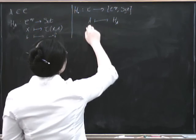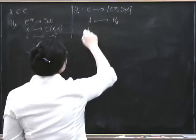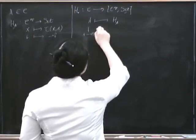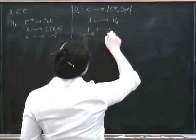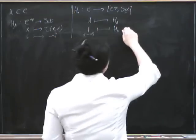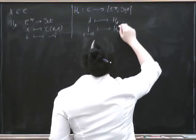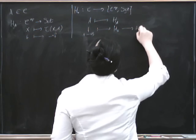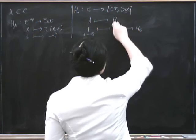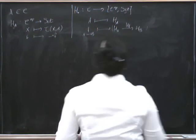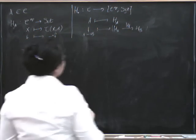Now suppose if we start with some morphism F from A to B, then what do we get over here? We get something that goes from H_A to H_B. So this has to be a morphism from H_A to H_B, and it's called H sub F.